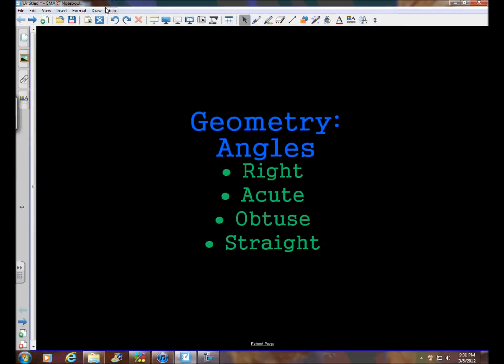Tonight's presentation, we're going to continue our look into geometry, and more specifically tonight, we're going to look at angles and four different types of angles. We have right, acute, obtuse, and straight angles.